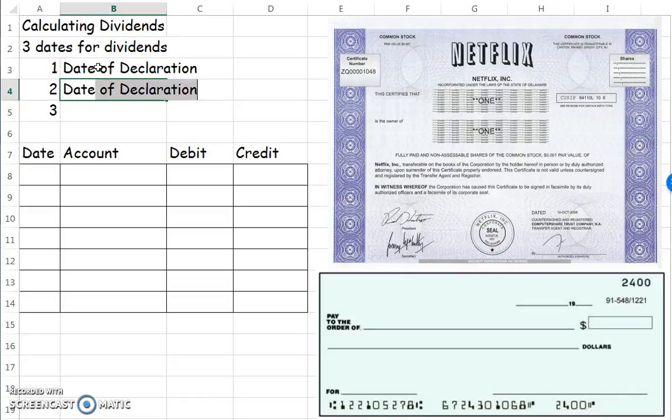The next one is the date of record. This date is going to stop the clock and say, who owns our stock on this day? Whoever is owning it on that date is the group of people who will receive our dividends. Since people are constantly trading our stock, we have to set a date and a time to choose who's going to get our dividends. So if you're holding that share of stock on that date, you're going to receive the dividend.